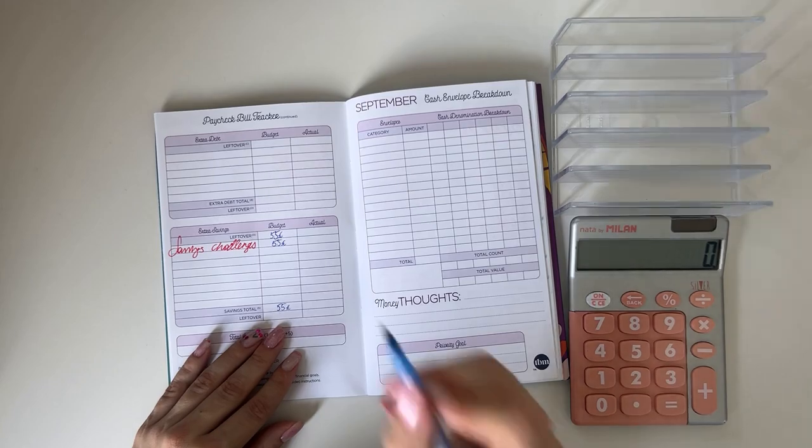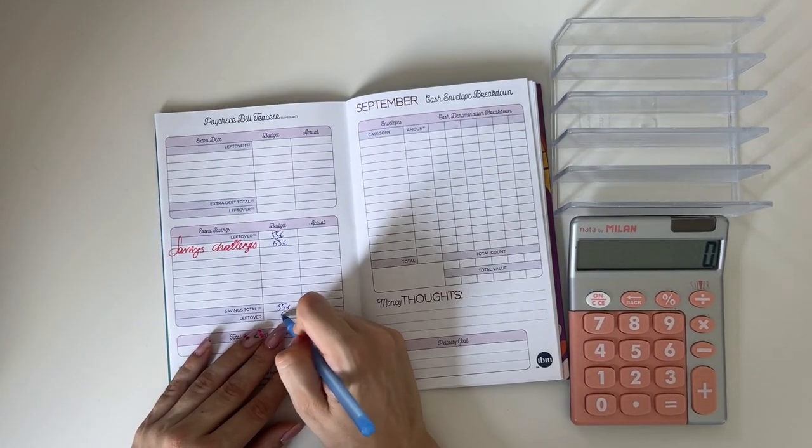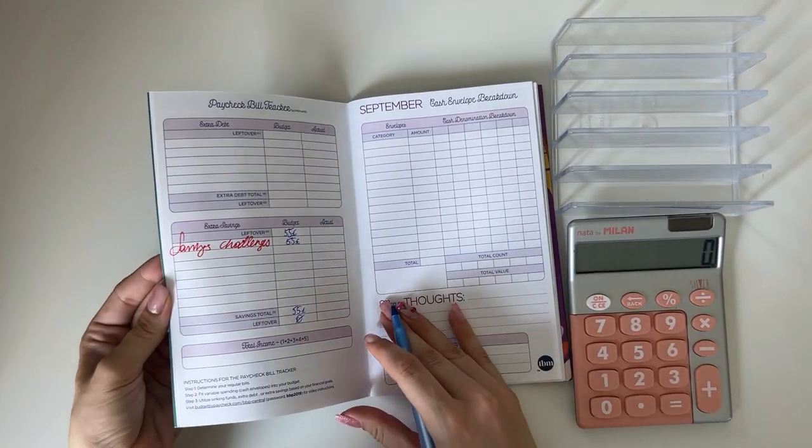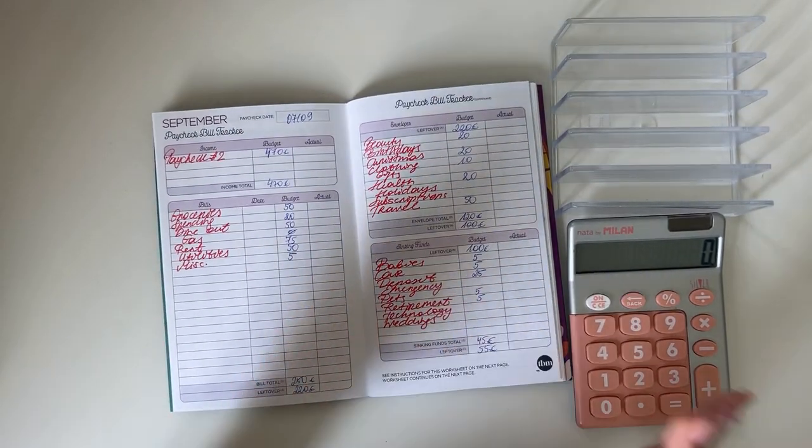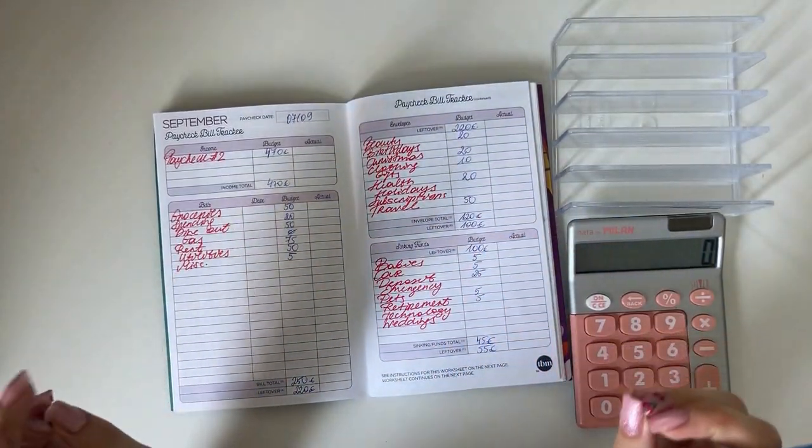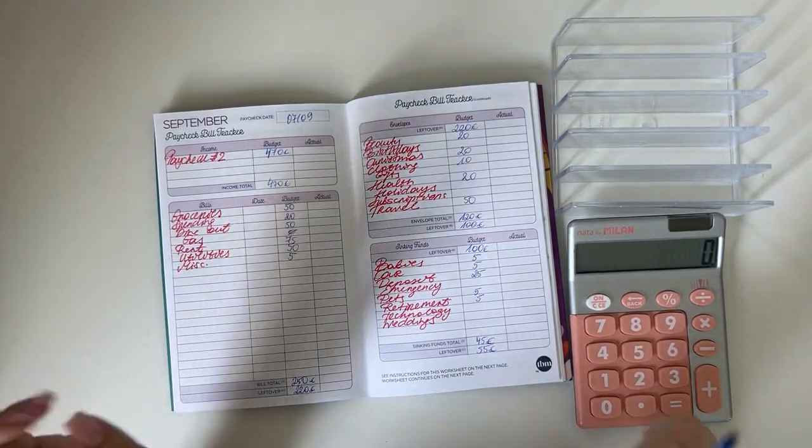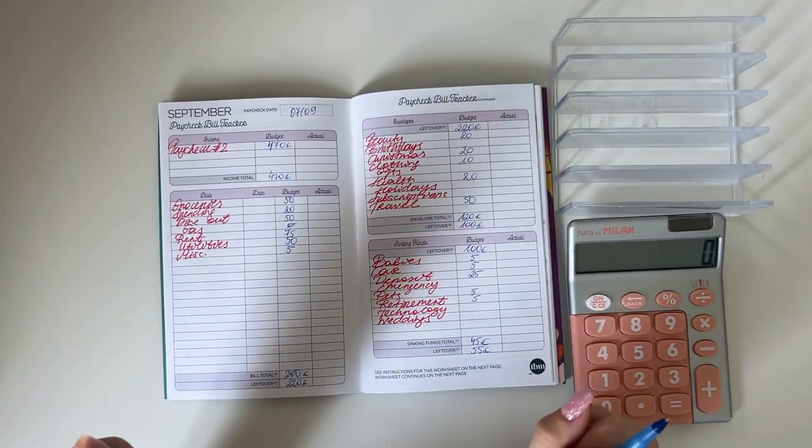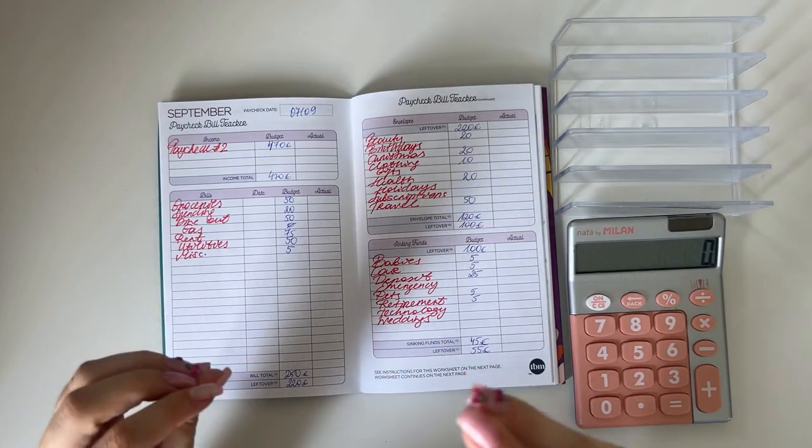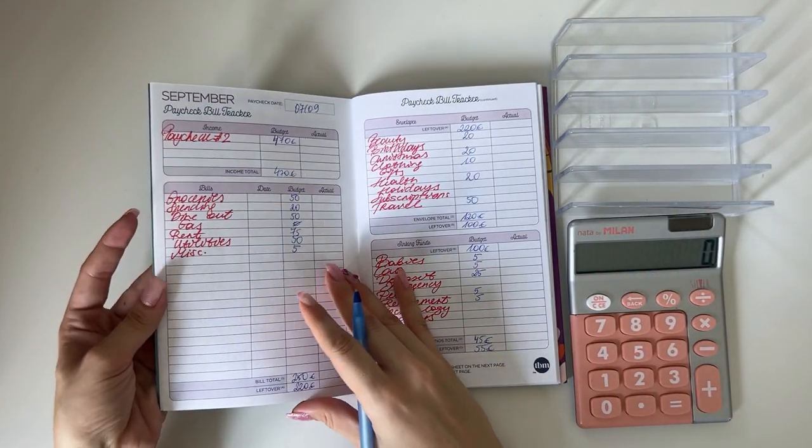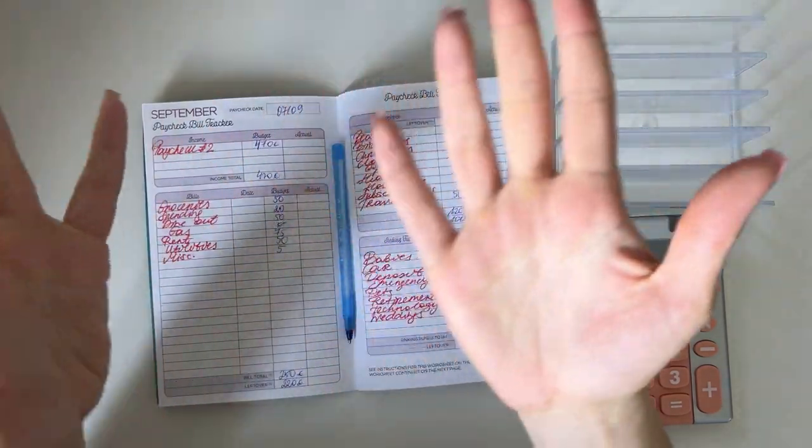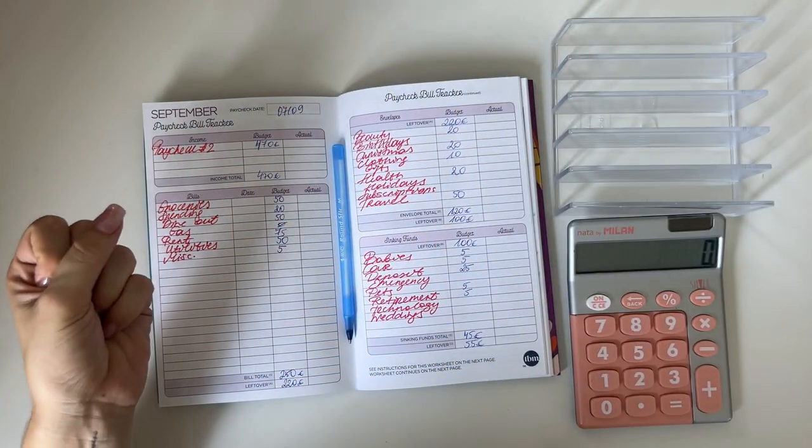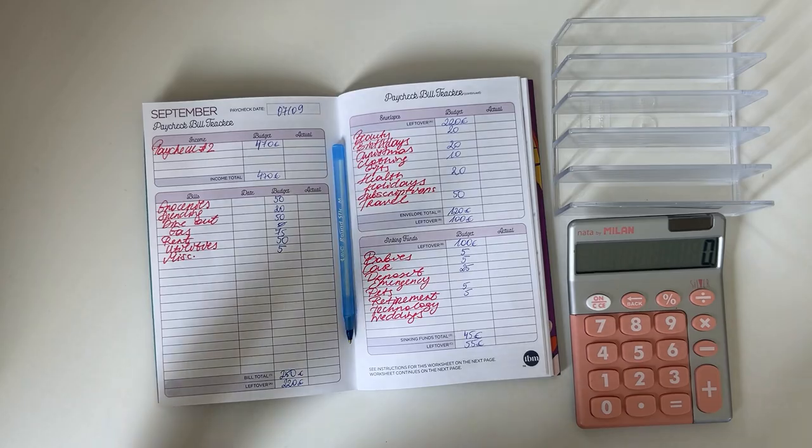So 55 we're putting into savings challenges and that's bringing us to zero, which means every euro of our income has a place to go into our budget. That was the setup video for week two of September. I will be back tomorrow with a cash stuffing video and then I have fun videos coming up next week as well. As usual, I wish you a very wonderful day, morning, evening wherever you are and I hope to see you next time. Bye!